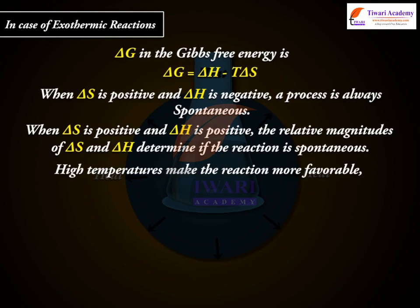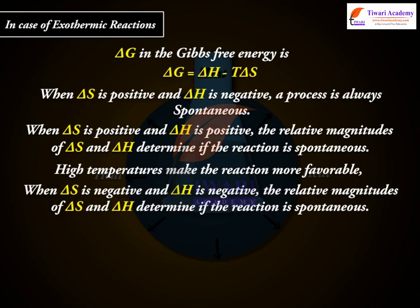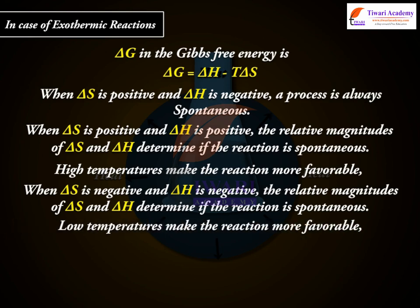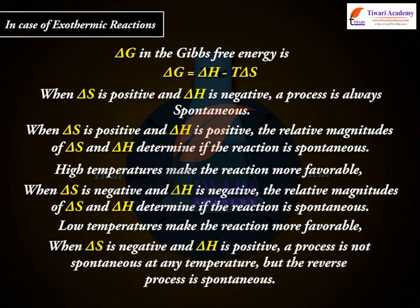High temperatures make the reaction more favourable. When ΔS is negative and ΔH is negative, the relative magnitudes of ΔS and ΔH determine if the reaction is spontaneous, and low temperatures make the reaction more favourable. When ΔS is negative and ΔH is positive, a process is not spontaneous at any temperature, but the reverse process is spontaneous.